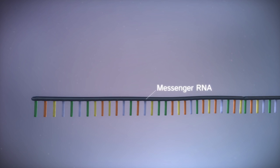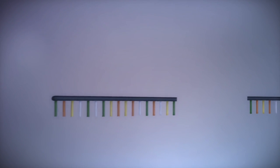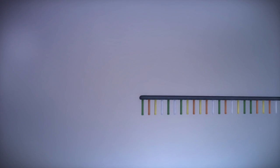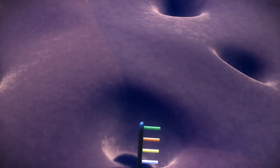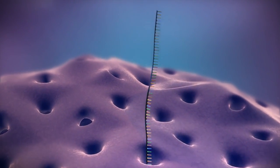Before the messenger RNA can be used as a template for the production of proteins, it needs to be processed. This involves removing and adding sections of RNA. The messenger RNA then moves out of the nucleus into the cytoplasm.